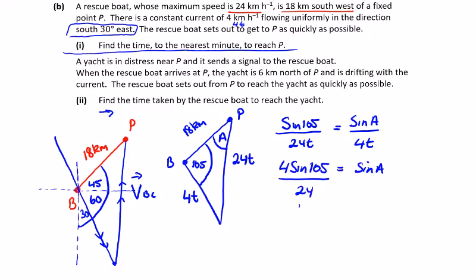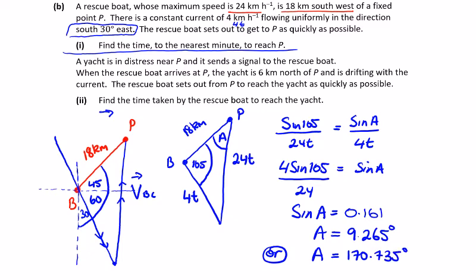Sine A in this case is 0.161, so that would give me A to be 9.265 degrees. Now A could also be 180 minus that, so 170.735 degrees. Can't be that because we've got 105 inside the triangle, so we can discount this one here and say that this has to be angle A.